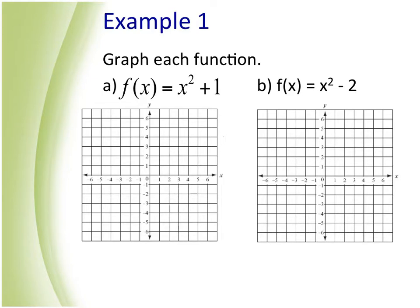For example with parabolas: f(x) = x squared is the parent — a U shape with vertex at (0, 0). If it says graph x squared plus 1, the graph shifts up one place — still a parabola, vertex now at (0, 1). For part B, x squared minus 2 shifts the vertex down to (0, negative 2), still pointing up.